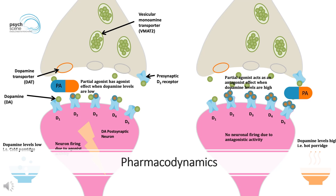Iloperidone shows high affinity and maximal receptor occupancy for dopamine D2 receptors in the caudate nucleus and putamen of the brains of schizophrenic patients. The improvement in cognition is attributed to iloperidone's high affinity for alpha-adrenergic receptors. Iloperidone also binds with high affinity to serotonin 5-HT2A and dopamine D3 receptors. It binds with moderate affinity to dopamine D4, serotonin 5-HT6 and 5-HT7, and norepinephrine alpha-1 receptors. Furthermore, iloperidone binds with weak affinity to serotonin 5-HT1A, dopamine D1, and histamine H1 receptors.